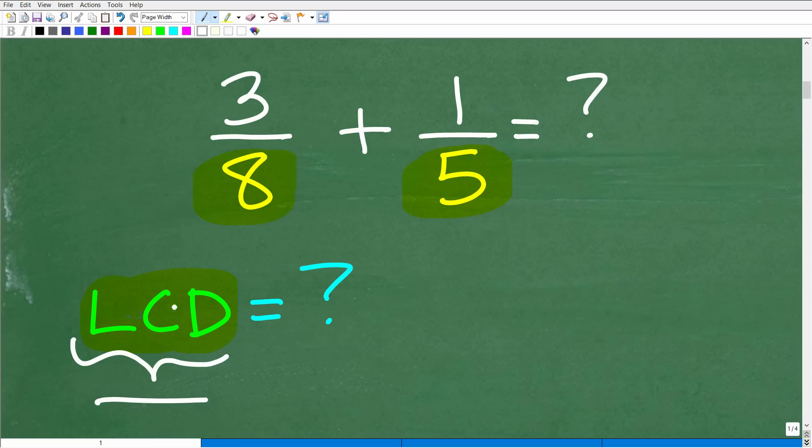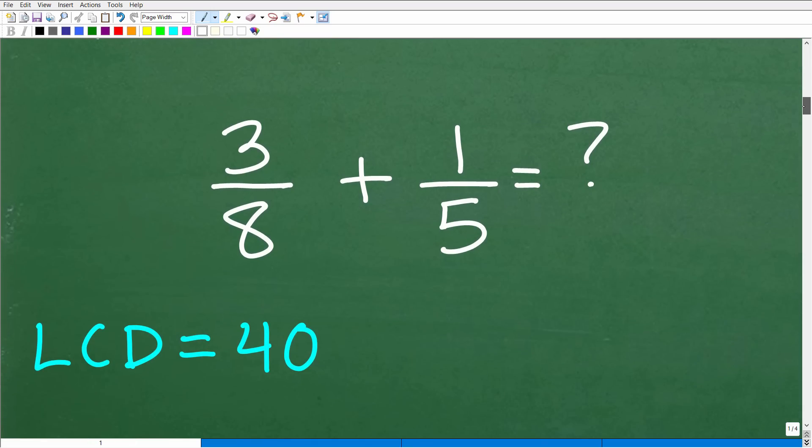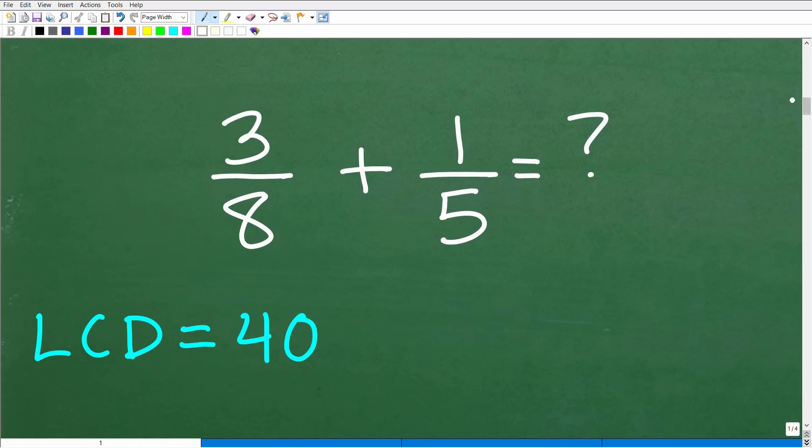Now, what is the lowest common denominator between 8 and 5? Okay, well, again, different ways we can think about this. You want to think about what is the lowest number that both 8 and 5 divide into? Okay, well, hopefully you said it's 40. Okay, so the lowest common denominator is 40.